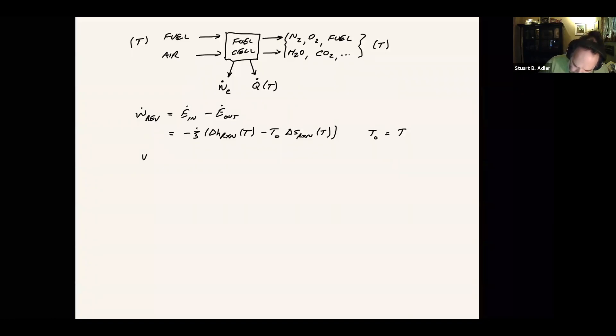And then we end up with W rev is equal to Xi dot times minus delta G of reaction. So this agrees with what we've been talking about so far, which is that the reversible cell potential corresponds to the maximum work and that reversible cell potential is tied to delta G of reaction. This goes back to what we were talking about with the Nernst equation.